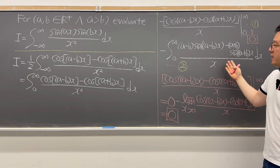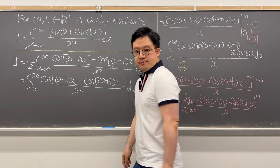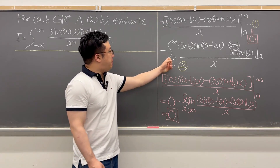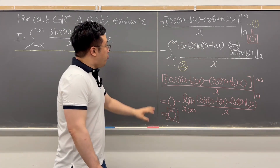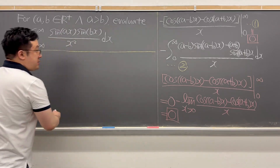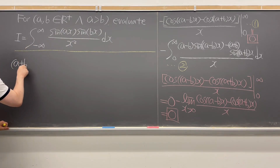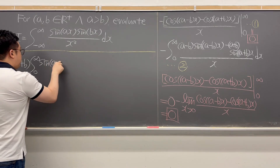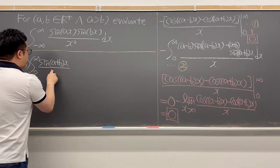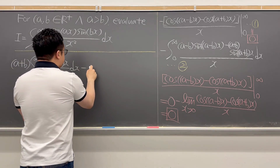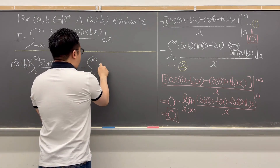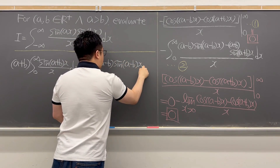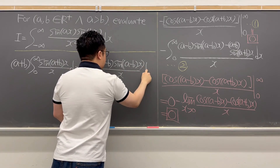Then it's all about analyzing the second integral. We can rewrite the second integral as: (A plus B) times the integral from 0 to infinity of sine of (A plus B)x divided by x, dx, minus (A minus B) times the integral from 0 to infinity of sine of (A minus B)x divided by x, dx.